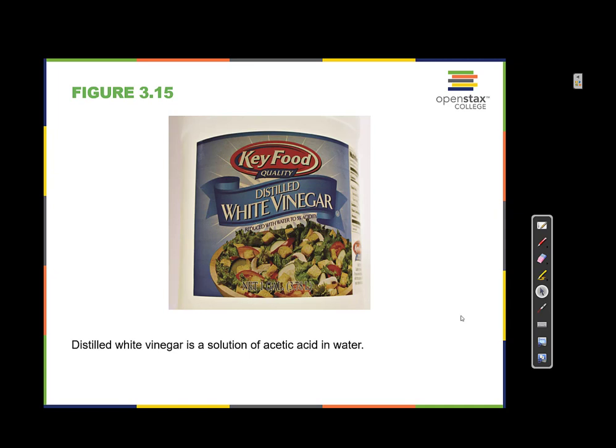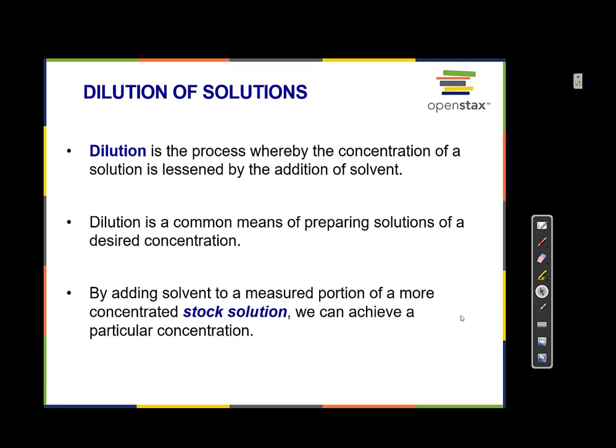Vinegar is another example of a solution: acetic acid is the solute and water is the solvent. Dilution is the process whereby the concentration of a solution is decreased by the addition of solvent. Typically, we make a very concentrated stock solution that has a lot of solute and not very much solvent, then dilute it to create less concentrated solutions of a precise concentration.